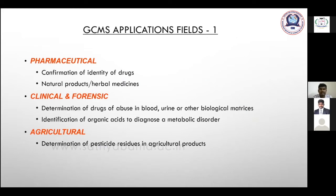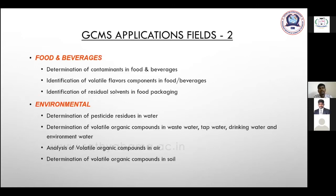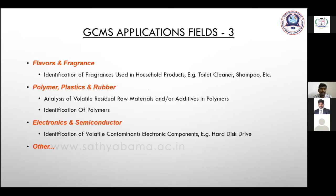GC-MS has wide applications: in pharmaceuticals for confirmation of drug identity and detection of natural products and herbal medicines; in clinical and forensic science; in agriculture, especially for determination of pesticide residues in agricultural products; in food and beverages; in environmental analysis for determining pesticide residues in water; in flavor and fragrance industries; and in polymer, plastic, rubber, electronics, and semiconductor analysis.